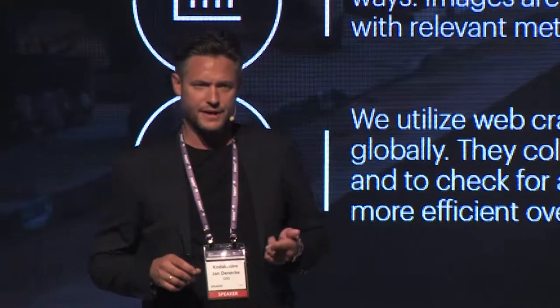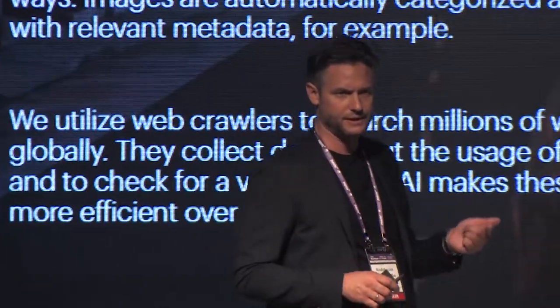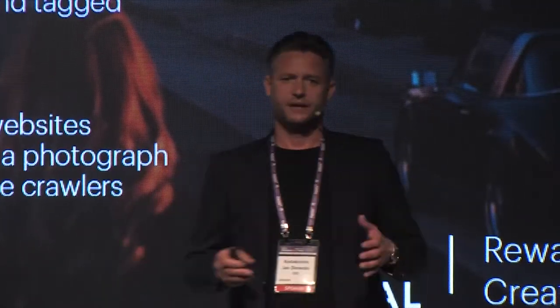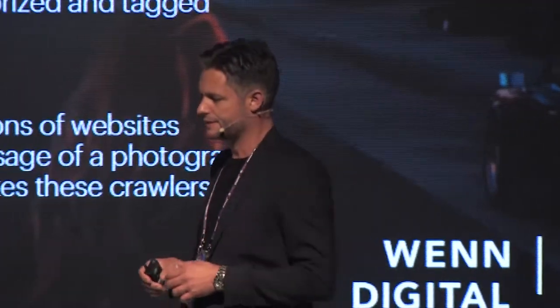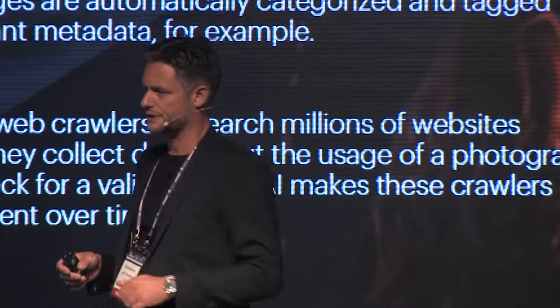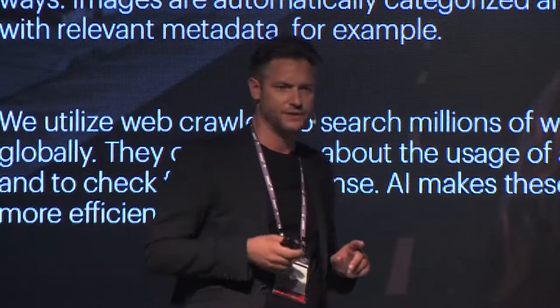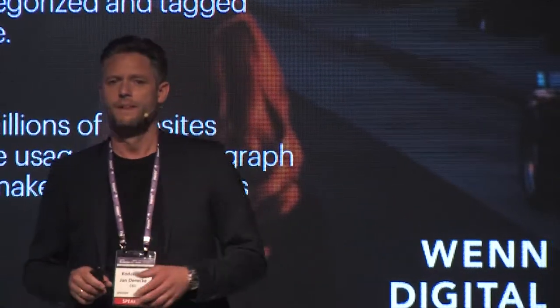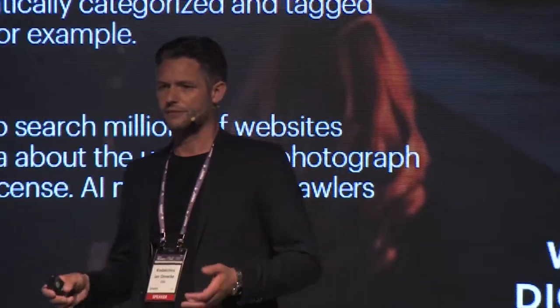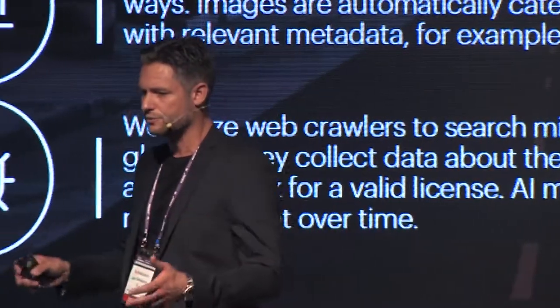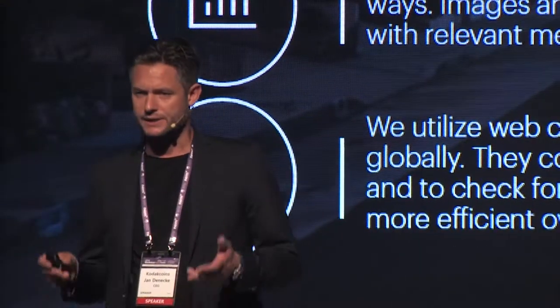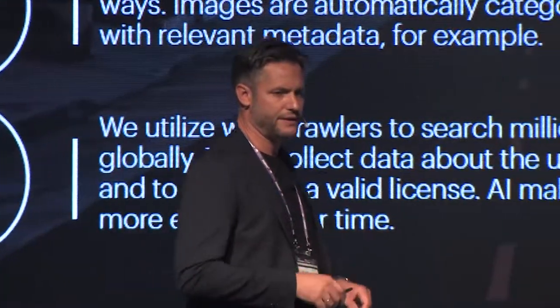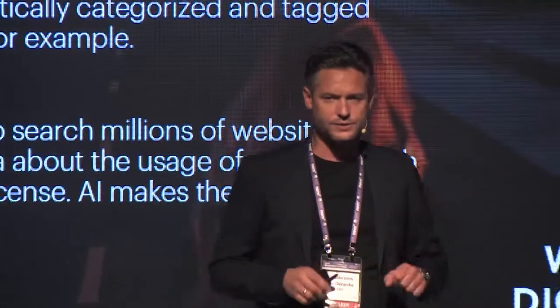Secondly, what information do we also need? The most important information is the legal information attached to that image — legal clearance. If you look at a typical image, there are different kinds of intellectual properties on that image mostly. There might be a brand on it, there might be a famous person on it, there might be a property on it and whatsoever. As long as you don't know what is on your image, and as long as you don't have the rights clearance about that image, it's impossible for you to commercialize or monetize that image. So you need to know what is on there, and you need to clear these rights — and that's what we are doing with the Kodak One platform.